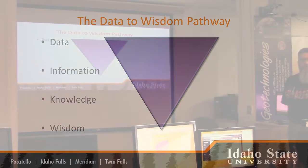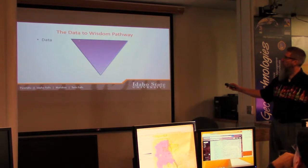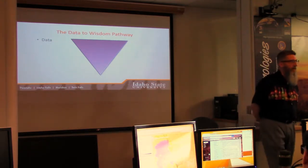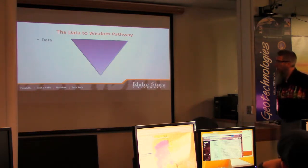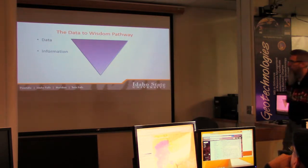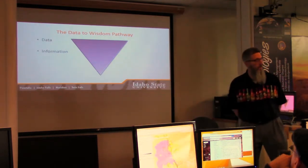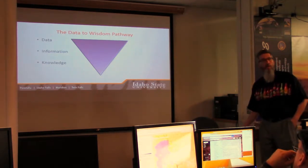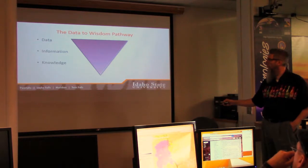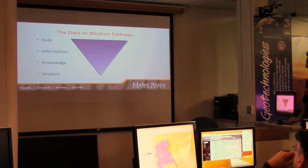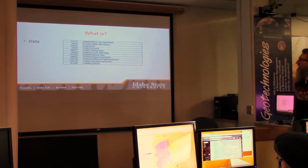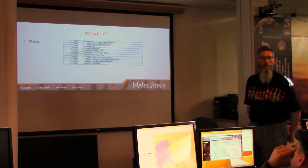Let's talk about the data-to-wisdom pathway. Here we have data at the very top — the broadest part of this inverted pyramid. Data is then distilled down into a smaller amount of information, then yet a smaller group called knowledge, and ultimately at the very pinnacle is wisdom — wisdom being the appropriate application of knowledge.